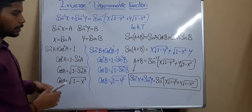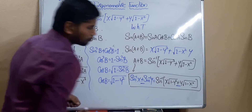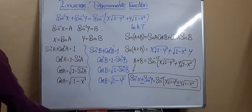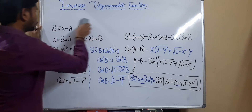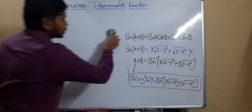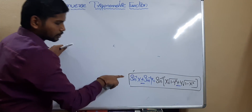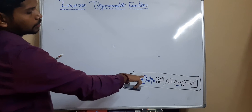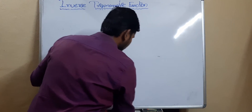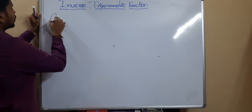If it is sin⁻¹(x) minus sin⁻¹(y), then in the formula the plus becomes minus. I think you understood all the steps. Now I'd like to take the next formula: cos⁻¹(x) + cos⁻¹(y). You need to remember the sin⁻¹ sum and difference formulas.